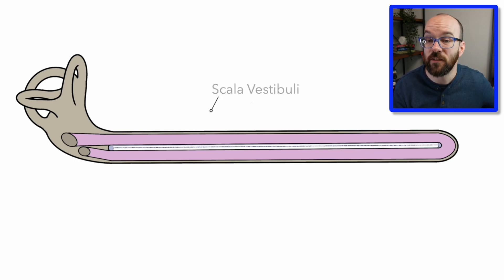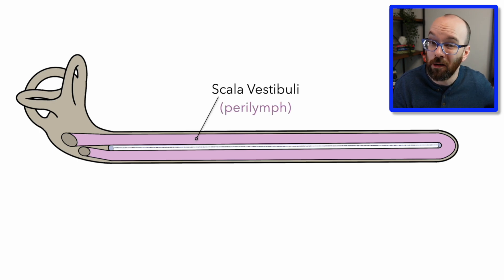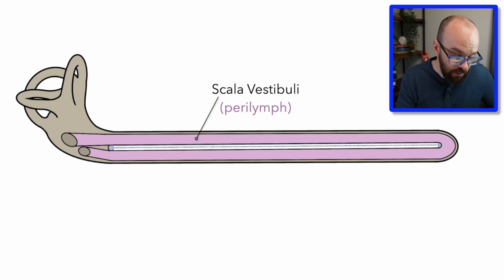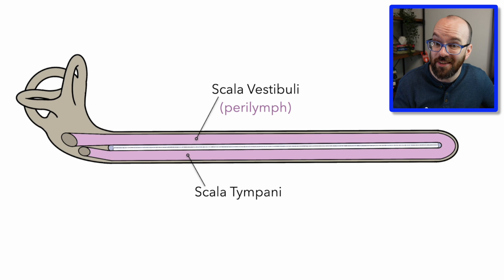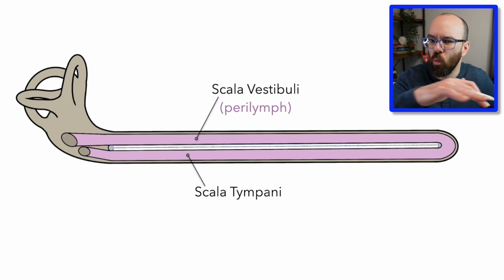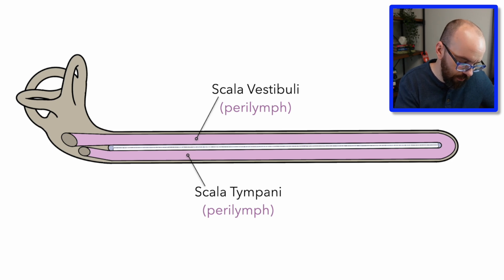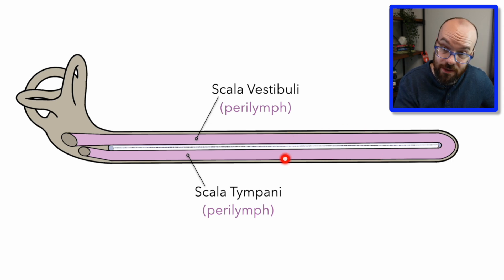First, we have the scala vestibuli, which is filled with a fluid called perilymph — 'para' meaning outside and 'lymph' meaning water, so the outside water inside the cochlea. The section at the bottom is the scala tympani, and these two are one continuous section also filled with perilymph. When signals come in from the stapes, they travel down the scala vestibuli and back to the round window through the scala tympani.